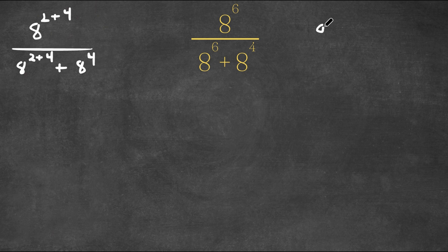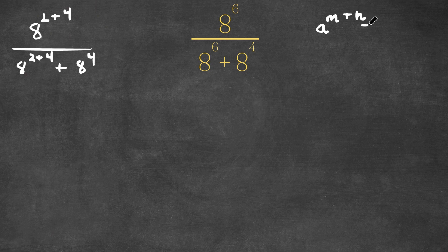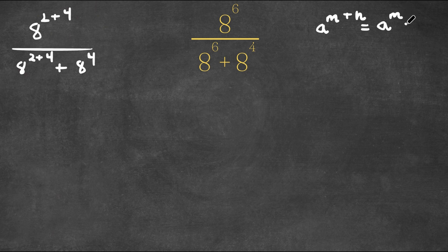If we have something in the form 8 to the power of m plus n, this is equal to 8 to the power of m times 8 to the power of n.